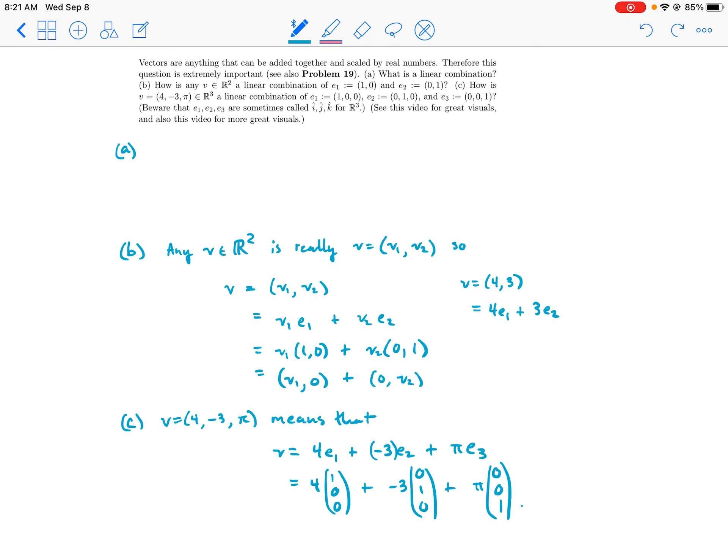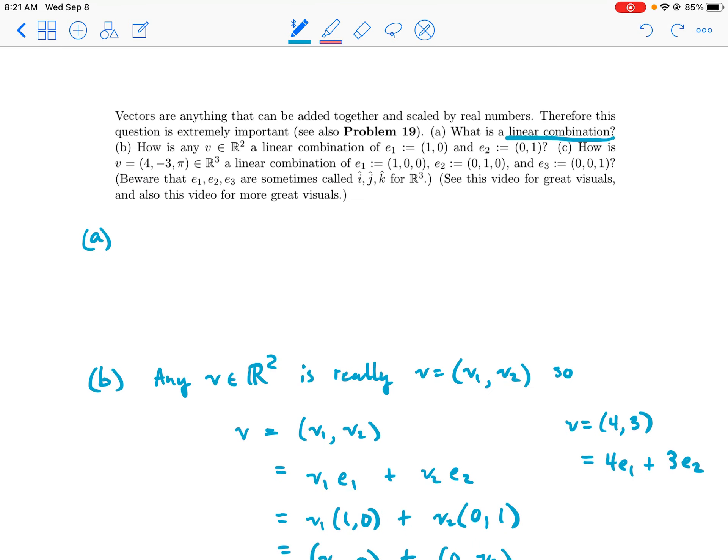Let's do (a). What is a linear combination? So this is actually an incomplete question—what is a linear combination of what? A linear combination of what? So you need to say... In my answer I'll make the question make sense. Of course I wrote this incomplete question, but a linear combination of vectors.